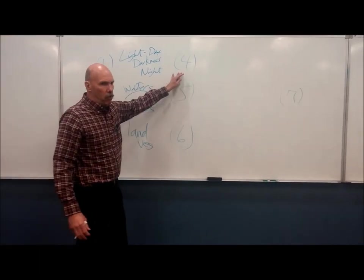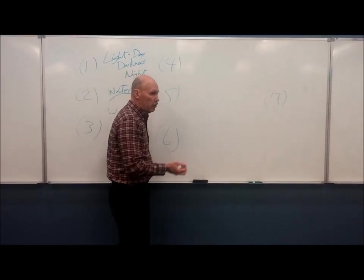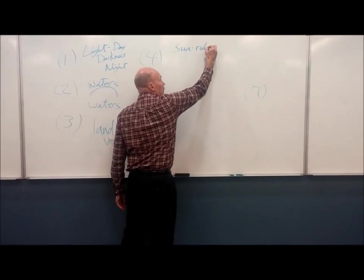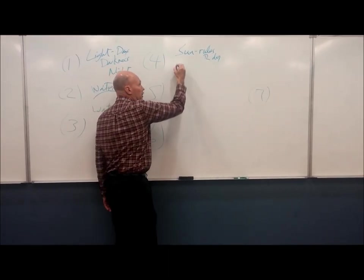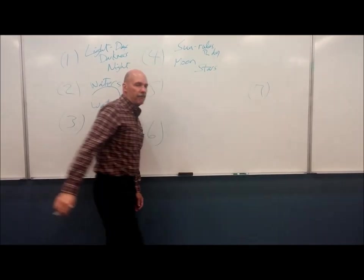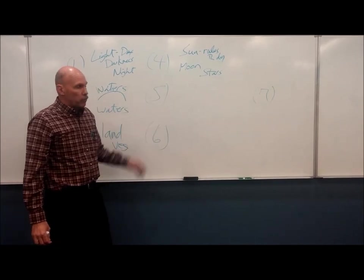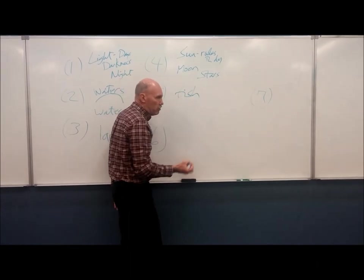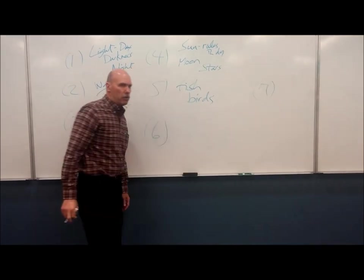On day 4, God creates the heavenly bodies. We have the greater light that rules the day — the sun rules the day — and then the lesser light that governs the night, which is the moon, and then the stars. So day 4 we have sun, moon, and stars. On day 5, we have the creation of the fish, great sea creatures, and the birds — fish and birds on day 5.